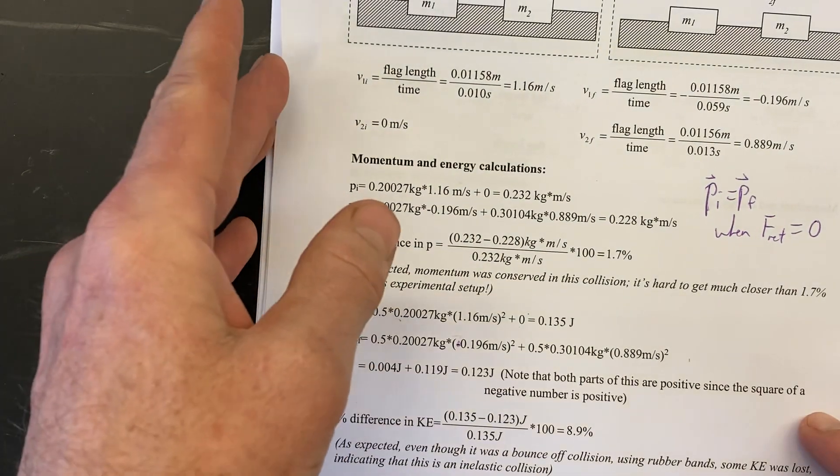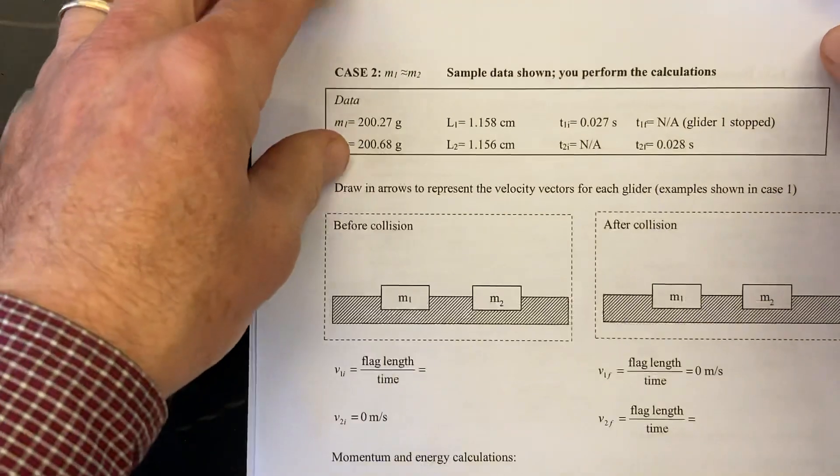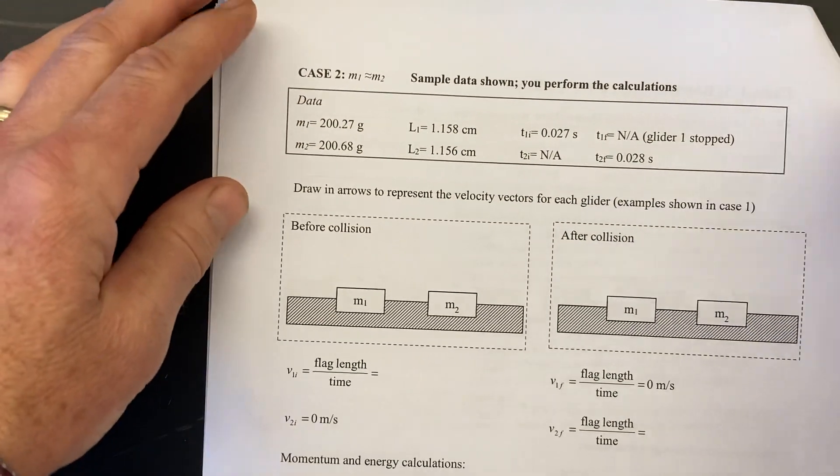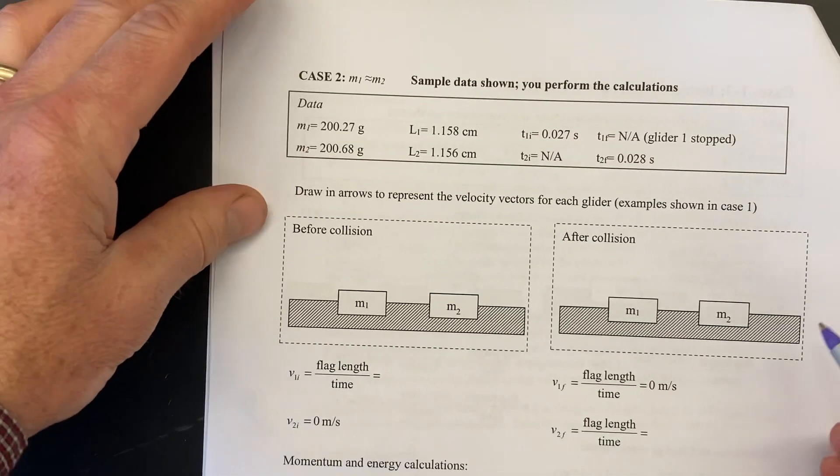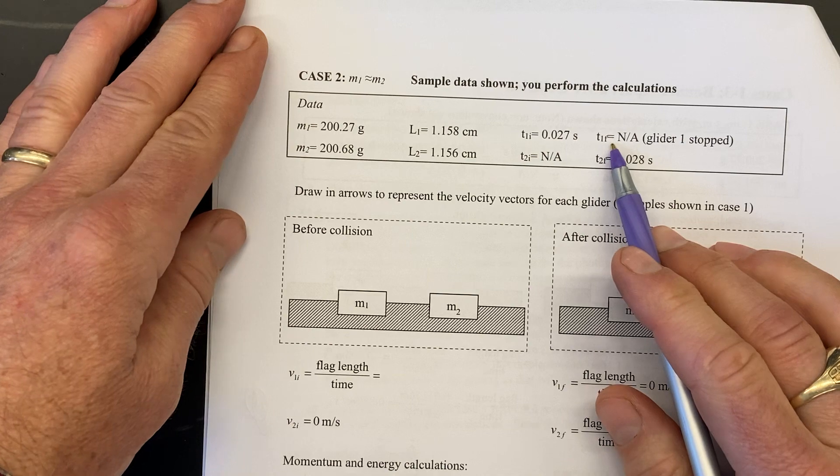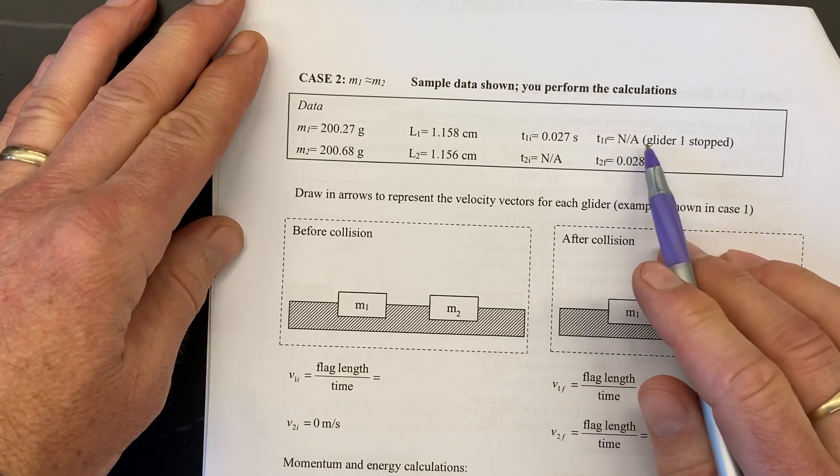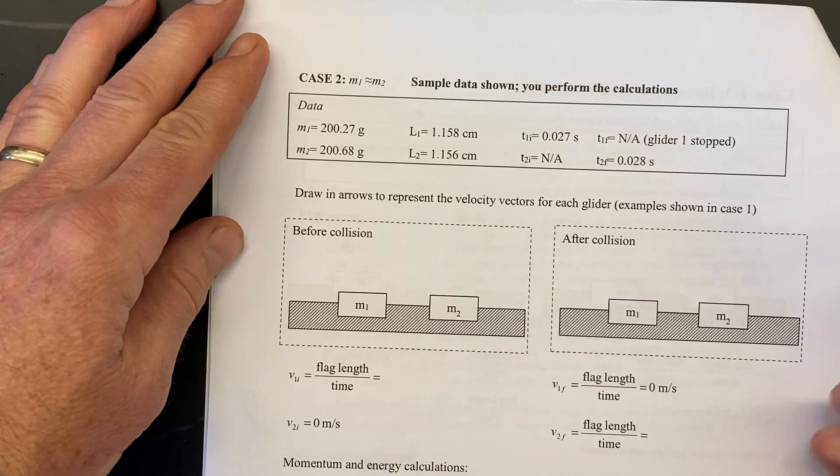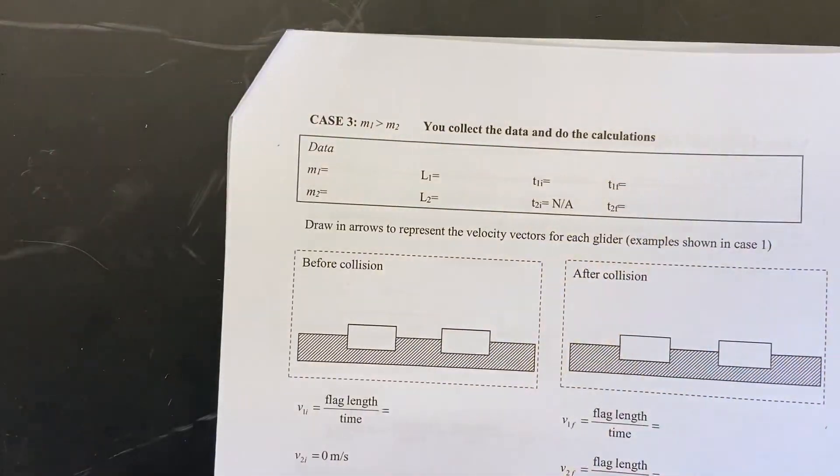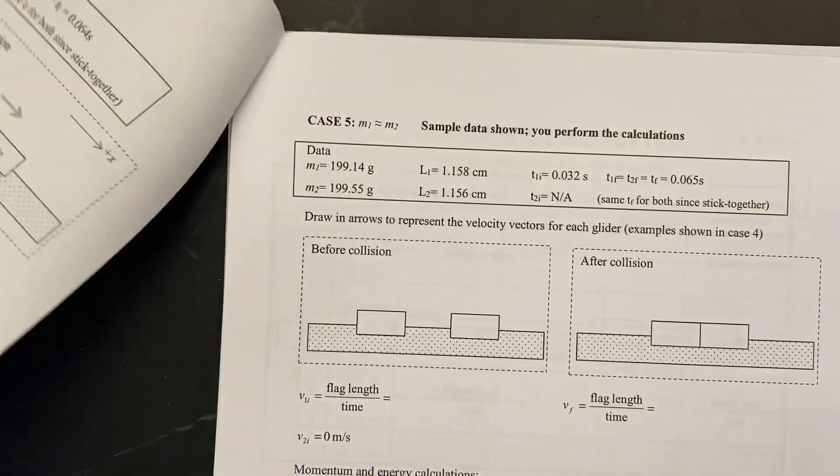All right so that's the idea and your job is to do this for case two. Okay so the experiment was conducted for you and the data is here. One difference is that glider one does not go back through the gate. It actually just stops and so that makes your calculations that much easier. Case three we're going to do in class. You're going to collect the data and do the calculations.